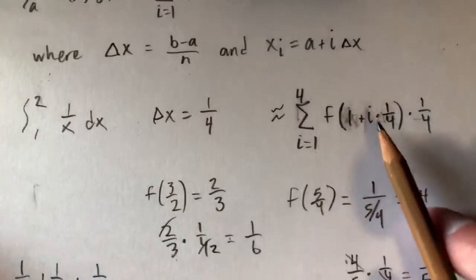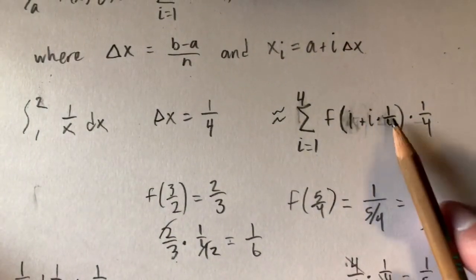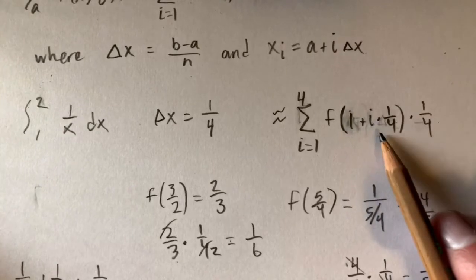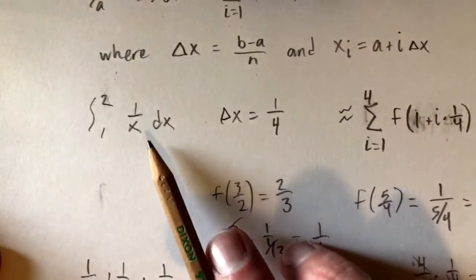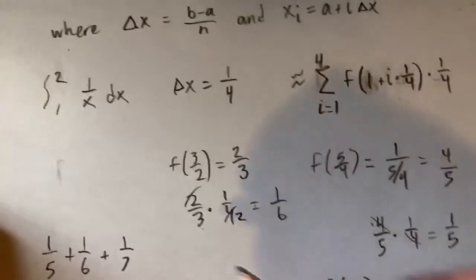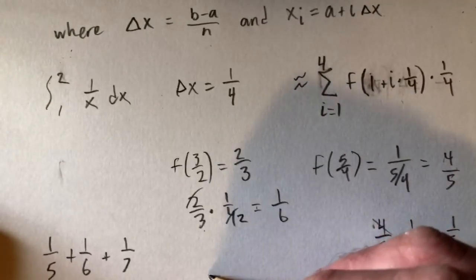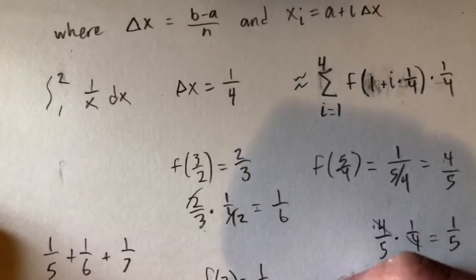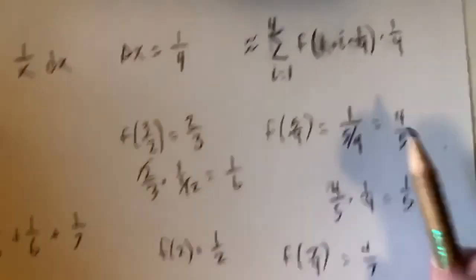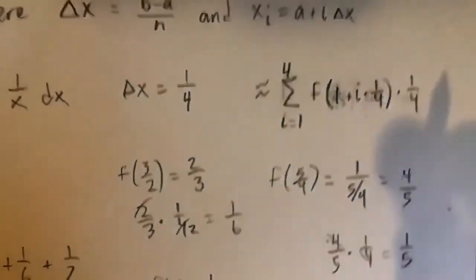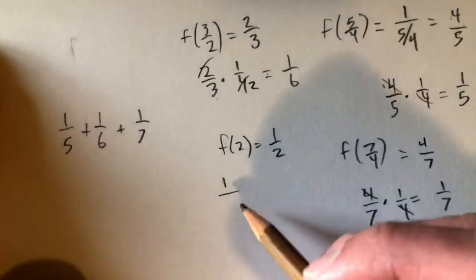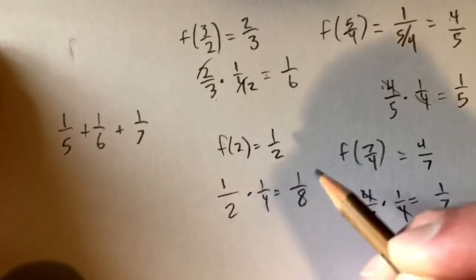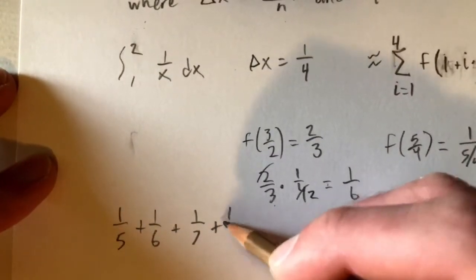For i equals 4, we get 4 times 1 fourth equals 1, and 1 plus 1 equals 2. So f of 2 equals 1 over 2, which is 1 half. Multiplying 1 half times 1 fourth gives us 1 eighth. So our final term when i equals 4 is 1 eighth.